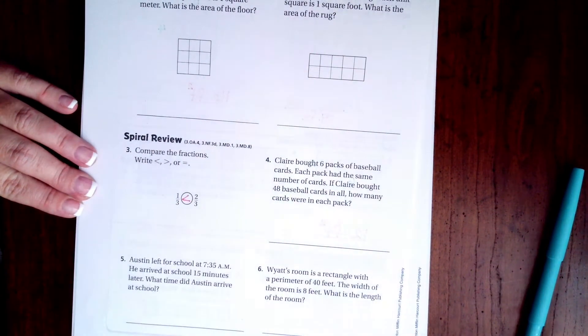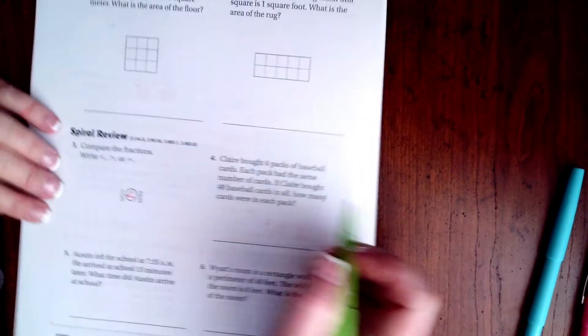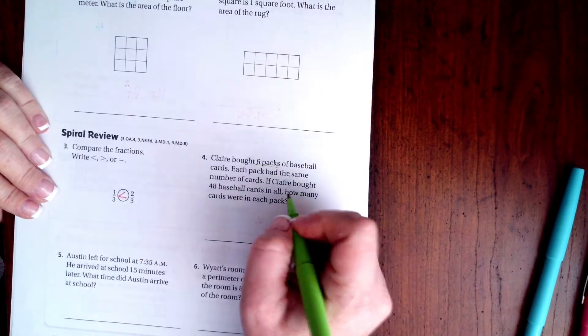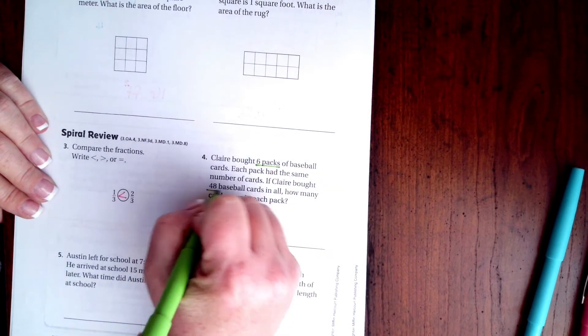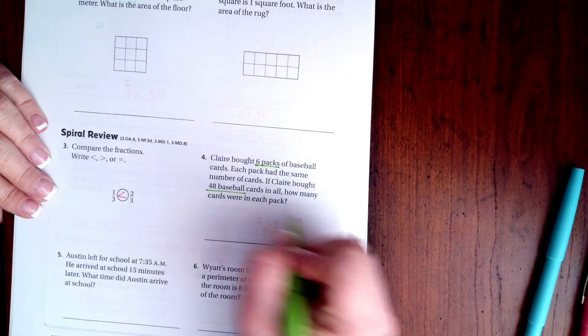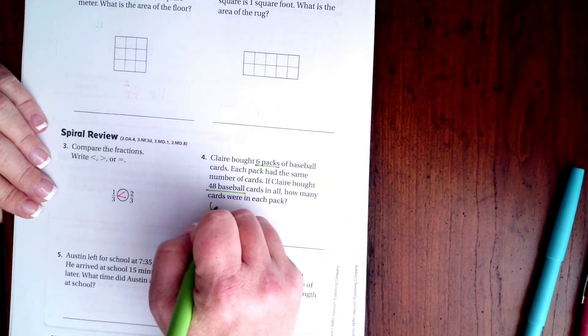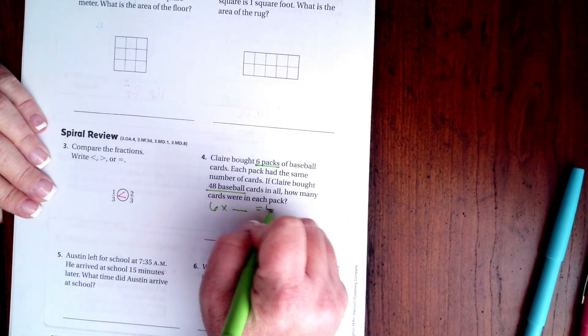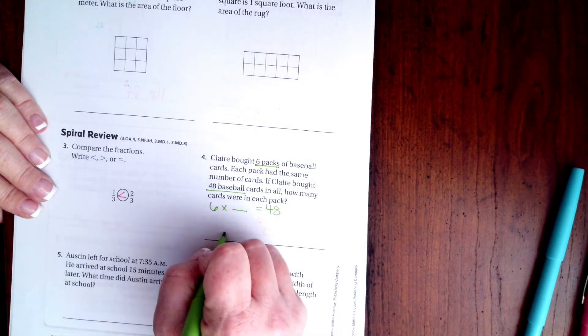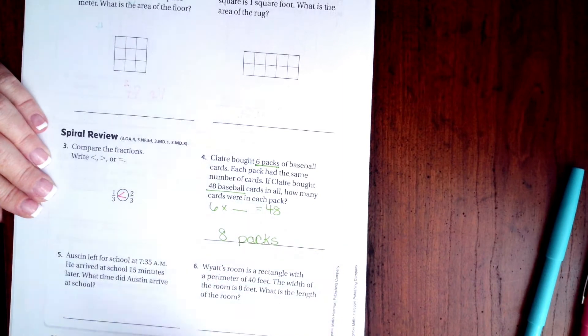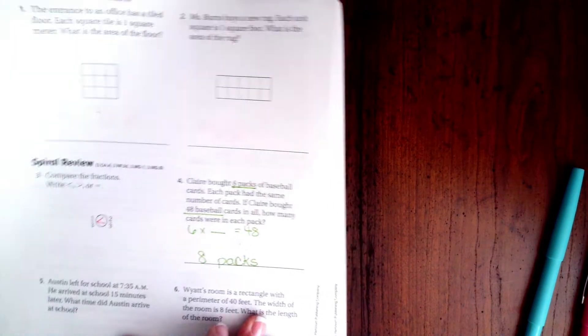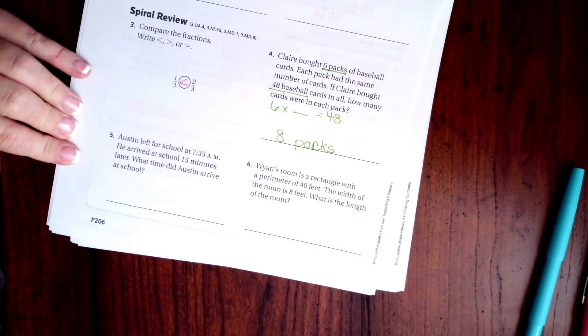Clara bought six packs of baseball cards. Each pack had the same number of cards. If Clara bought 48 baseball cards in all, how many cards are in each pack? Well, six times what is 48? I know that six times eight is 48, so she bought eight packs.